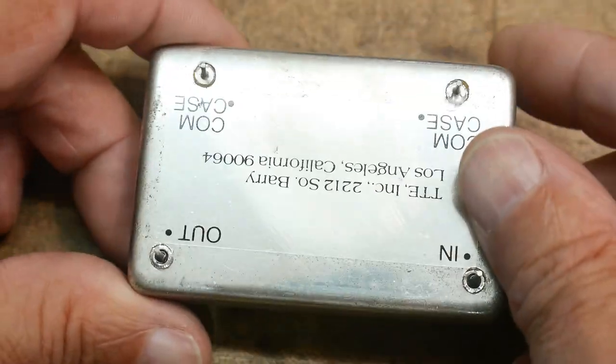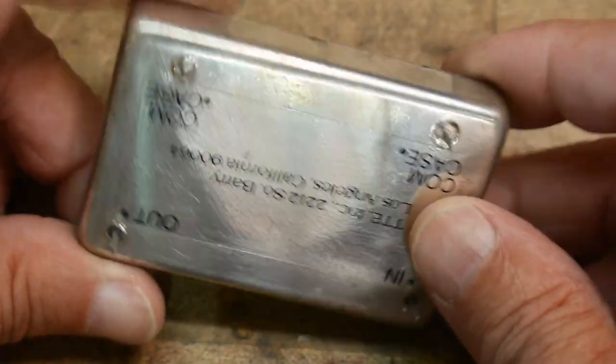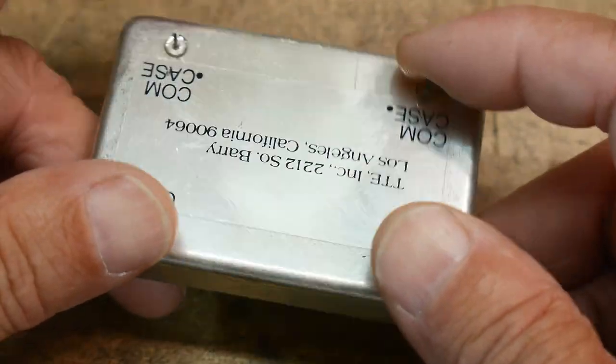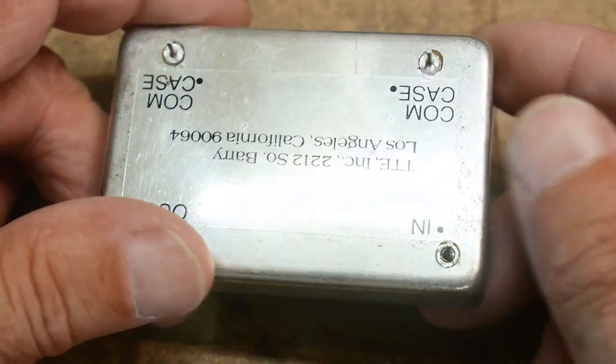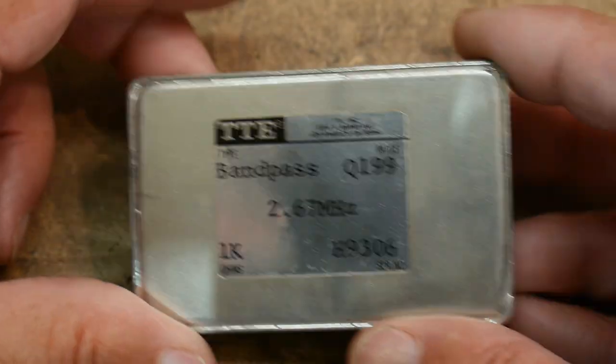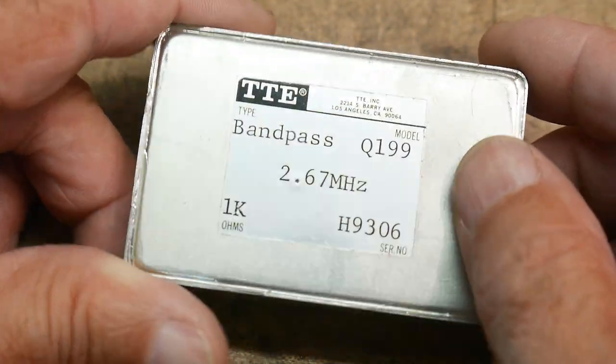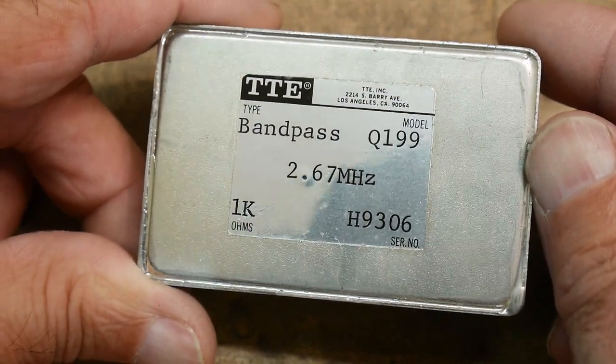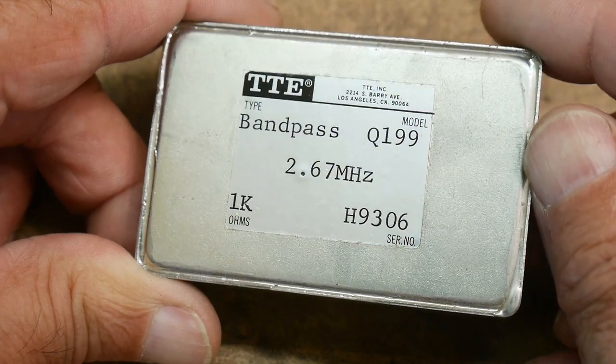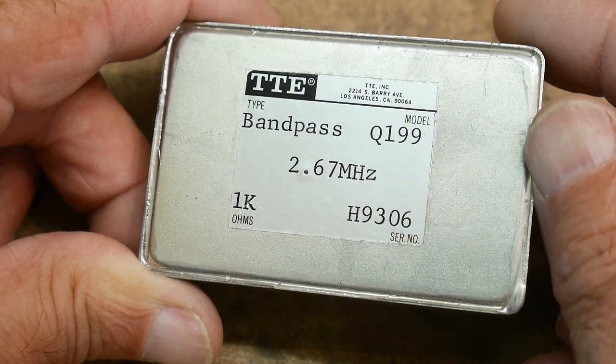I think the first thing to do would be to go measure it. We'll go over to the 8921, which is basically a tracking generator with a spectrum analyzer, and we'll sweep this out and see what kind of bandpass it is. Should be centered around 2.7 megahertz.